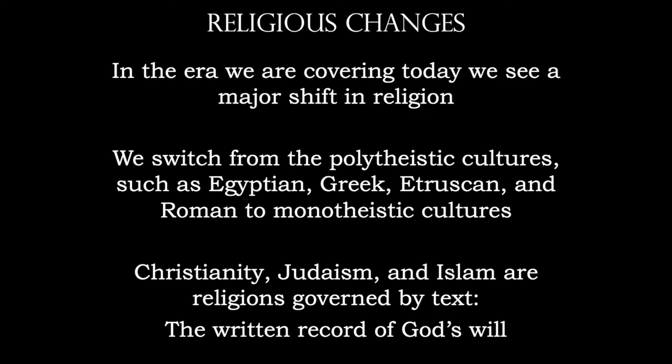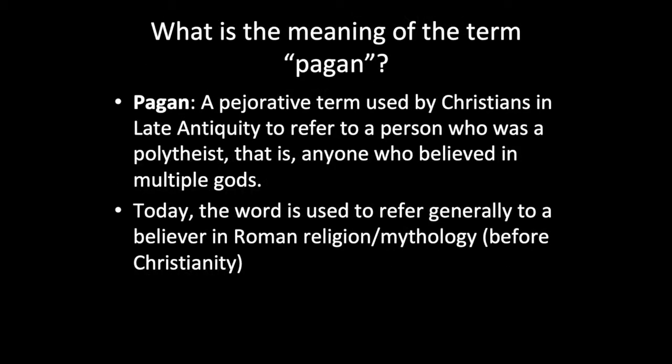We're also going to see religious changes, as with the Edict of Milan that legalizes Christianity. We're switching from a polytheistic culture — Egypt, Greece, Etruscans, and Romans all believed in that — to a monotheistic culture: Christianity, Judaism, and Islam. These are all religions governed by text, a book, a written record of God's will. The term 'pagan' is a pejorative term used by Christians in Late Antiquity to refer to a polytheist — someone who believes in multiple gods. Today the word refers generally to a believer in Roman religion and mythology prior to the beginning of Christianity.